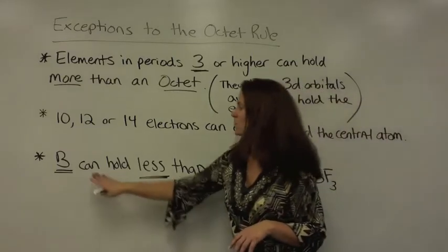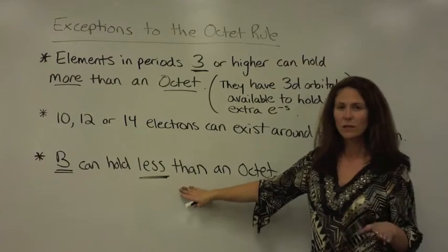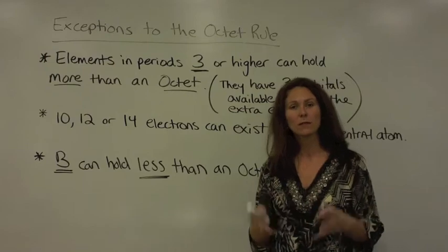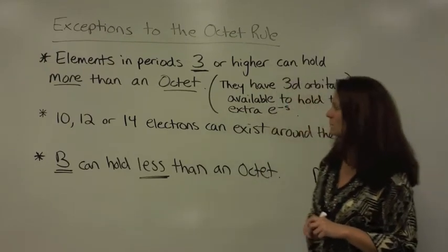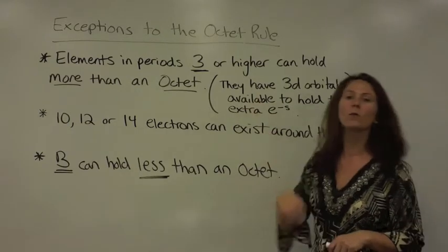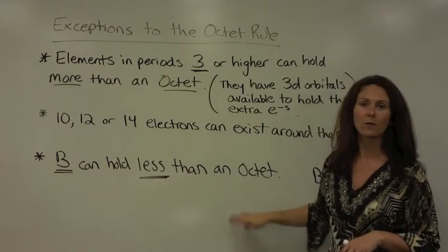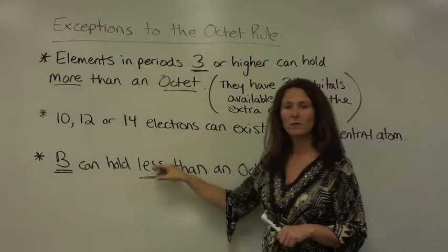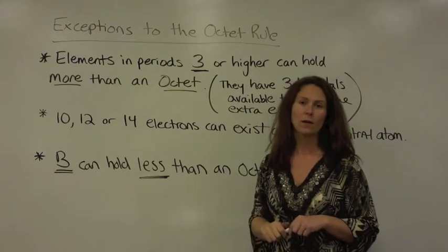The other exception is when boron can hold less than an octet. It's generally seen with boron in many cases, so boron can actually be relatively stable with only having six around the nucleus. When there is more than an octet, you can have 10, 12, or even 14 electrons in that area.